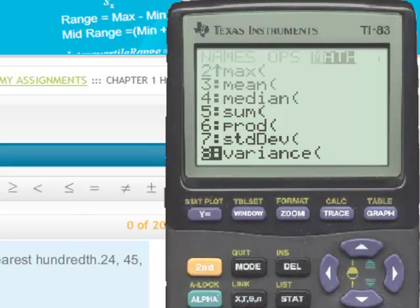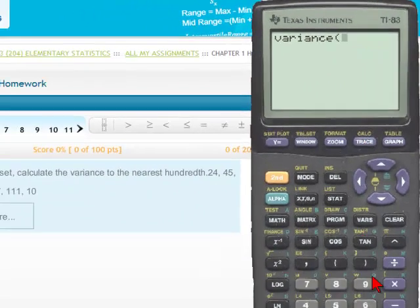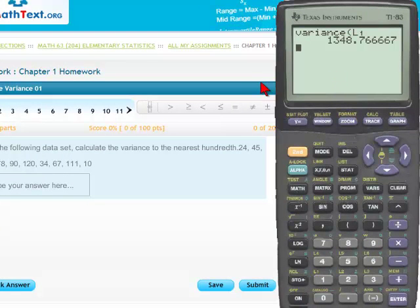We can just simply hit the number 8, and now we have the variance command, which we will now ask for the variance for LIST1. And here we have the variance for LIST1,